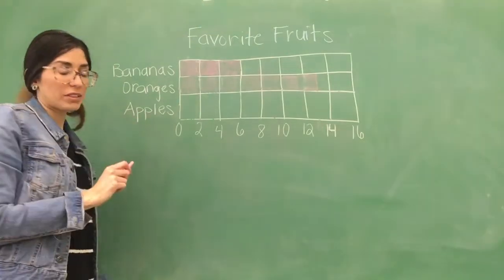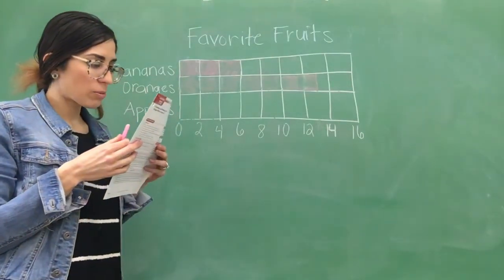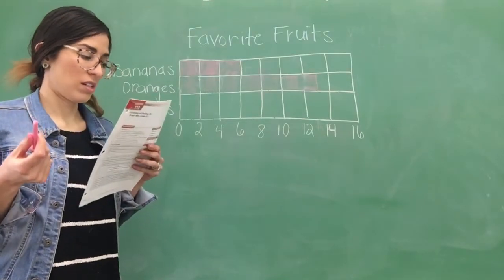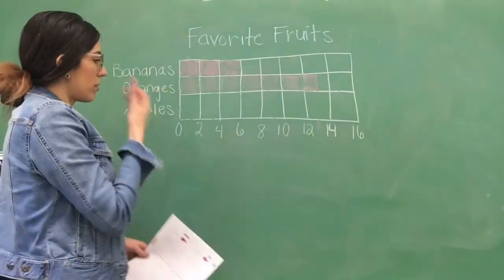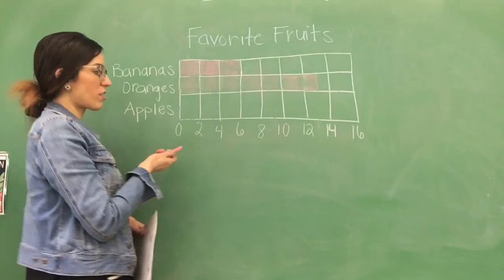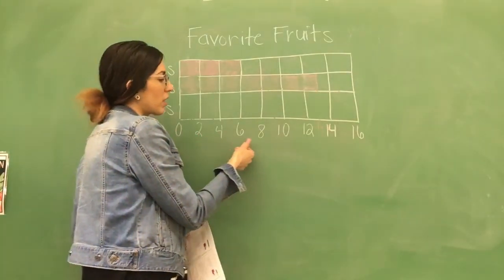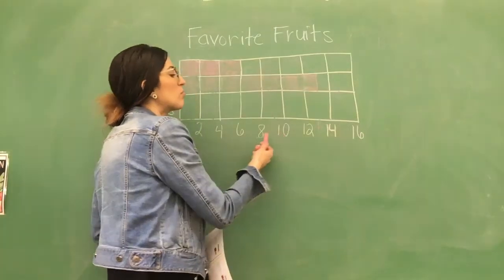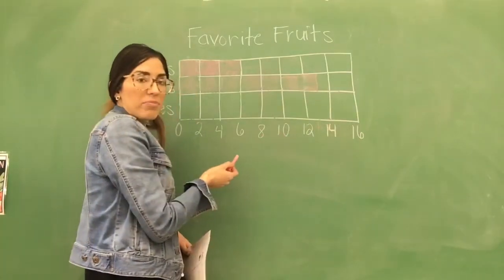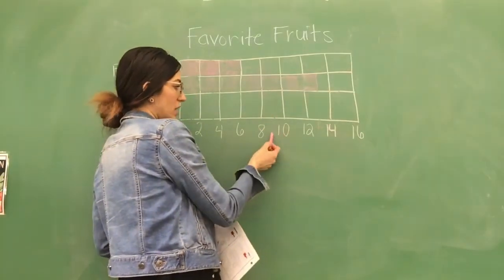Now, we're going to do our apples. So, for the apples, we have nine students. Nine students loved apples. So, first of all, we're going to find the number. 0, 2, 4, 6, 8, and then 10. So, 9 would be, that's right, halfway between 8 and 10.